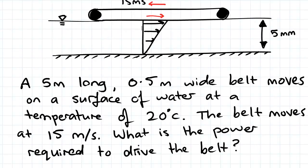So we assumed that at the surface here that it moves at the same speed as the belt because there is no slip at that interface.